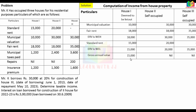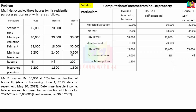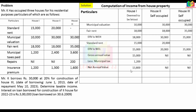For the three houses, we calculate the Expected Rental Value (ERV). First, compare municipal valuation and fair rental value — whichever is higher is the ERV. Municipal valuation: 10,000; 30,000; 30,000. Fair rental value: 18,000; 18,000; 35,000. Higher values (ERV): 18,000; 30,000; 35,000. Then compare ERV with standard rent (15,000; 20,000) — whichever is less applies. Net Annual Value after vacancy deduction: Rs. 13,800.